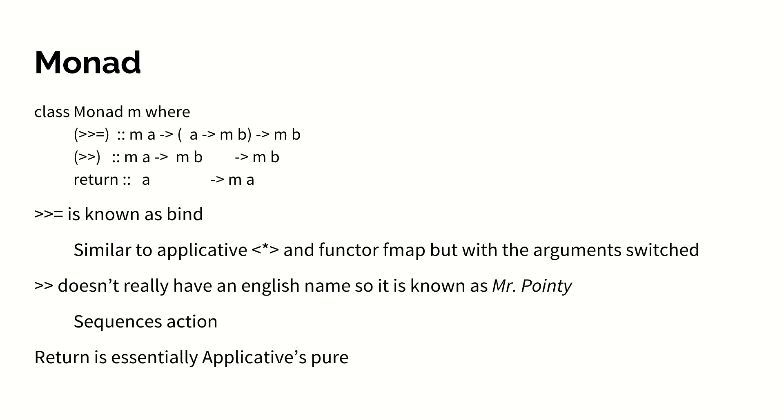Bind is similar to applicative's app and functor's fmap. However, it takes an m structure of a and then a function rather than a function and then a structure. That's one key difference.